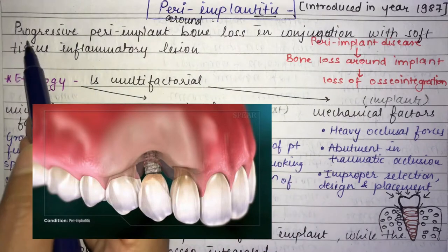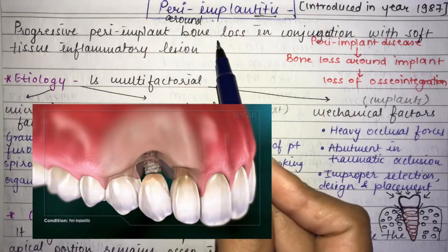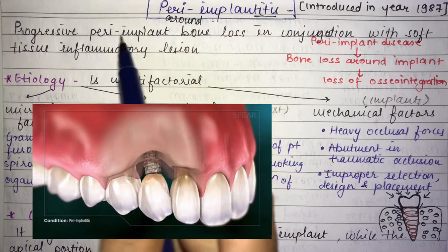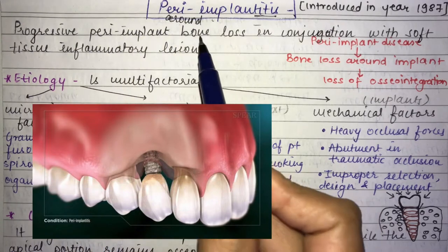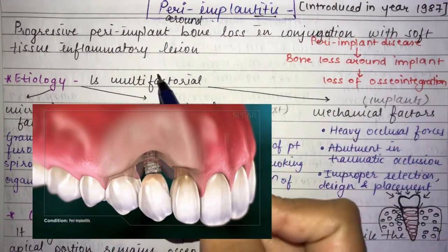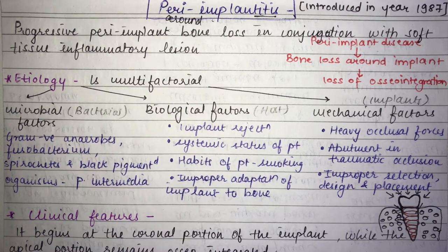The peri implant disease causes bone loss around the implant and loss of osseointegration, meaning the implant comes out of the socket. The formal definition is: peri-implantitis is a progressive peri-implant bone loss in conjunction with a soft tissue inflammatory lesion — you will see bone loss along with soft tissue inflammation.